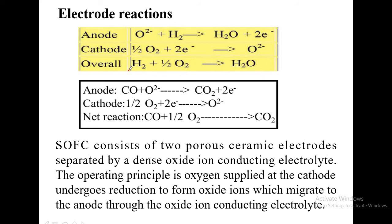It is not direct combustion but indirect combustion, converting the chemical energy present in the fuel into electrical energy. Hydrogen supplied at the anode reacts with the oxide ions, forming water and releasing electrons. These electrons move through the external circuit to the cathode, where oxygen is reduced to oxide ions. The overall reaction is hydrogen reacting with oxygen to give water.